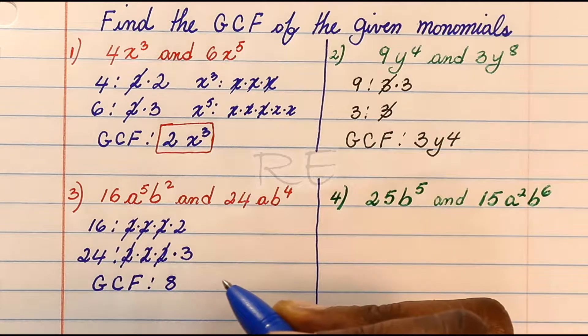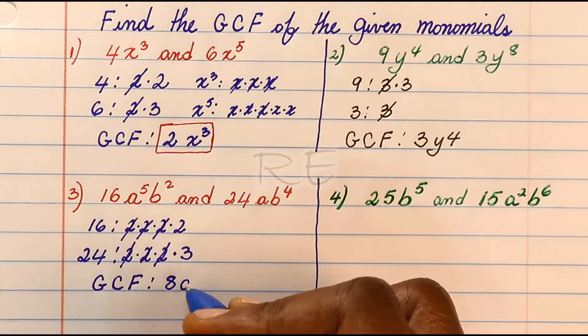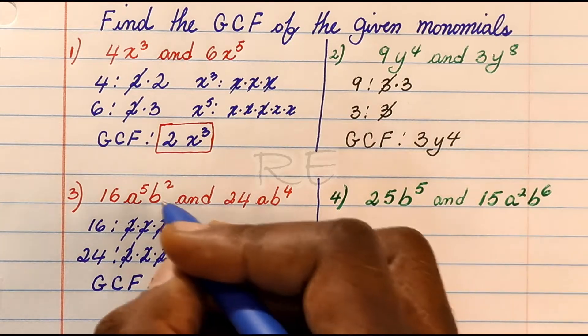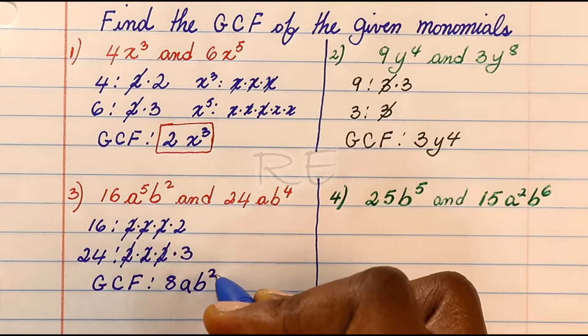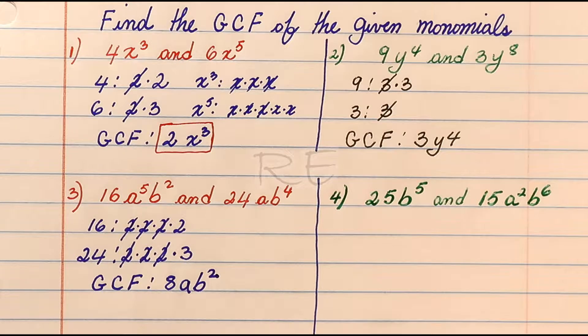For the variable, we will take the lesser of the exponents. This one is a to the first, which is a, and the other one is b to the second. The GCF is 8ab squared.